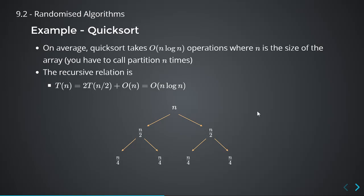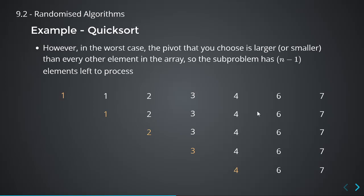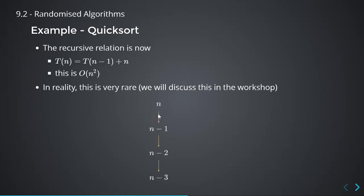That's the average case of quicksort. In the worst case — if the array is already sorted or sorted in descending order — whenever you pick the pivot, everything else is going to be on the right-hand side. Instead of going from n to n/2 to n/4, you end up with the recurrence T(n) = T(n-1) + n, which gives O(n²) — that's the common summation 1 + 2 + 3 + ... + n.